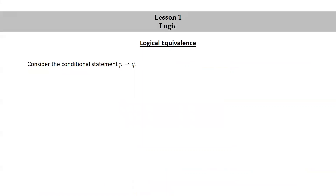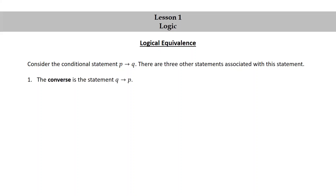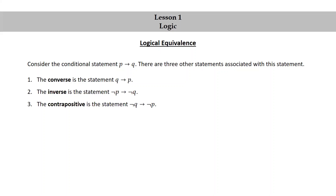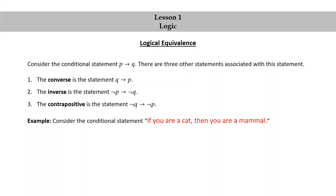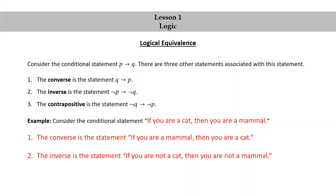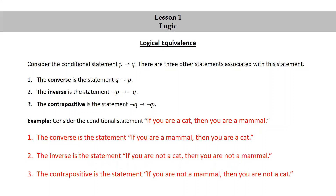Consider the conditional statement p implies q. There are three other statements associated with this statement. The converse is q implies p. The inverse is not p implies not q. The contrapositive is not q implies not p. For example, consider the conditional statement 'if you are a cat, then you are a mammal.' The converse is 'if you are a mammal, then you are a cat.' The inverse is 'if you are not a cat, then you are not a mammal.' The contrapositive is 'if you are not a mammal, then you are not a cat.'